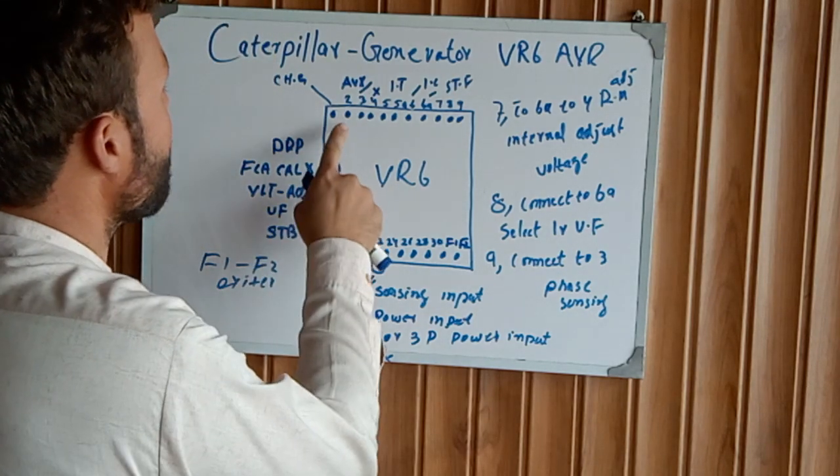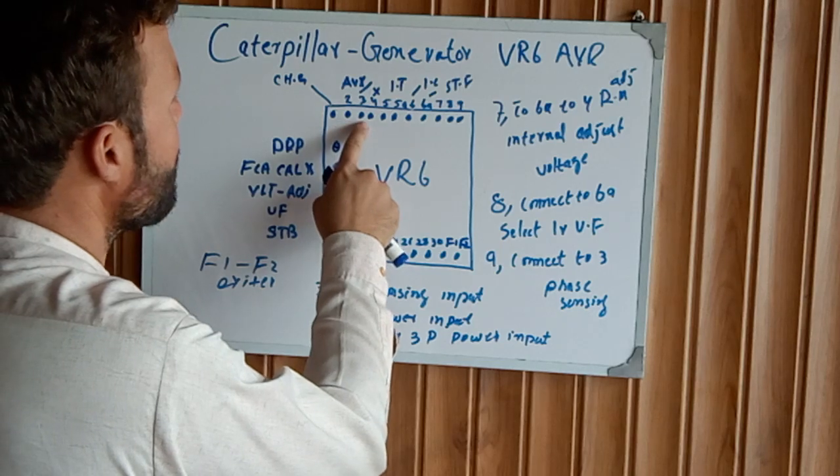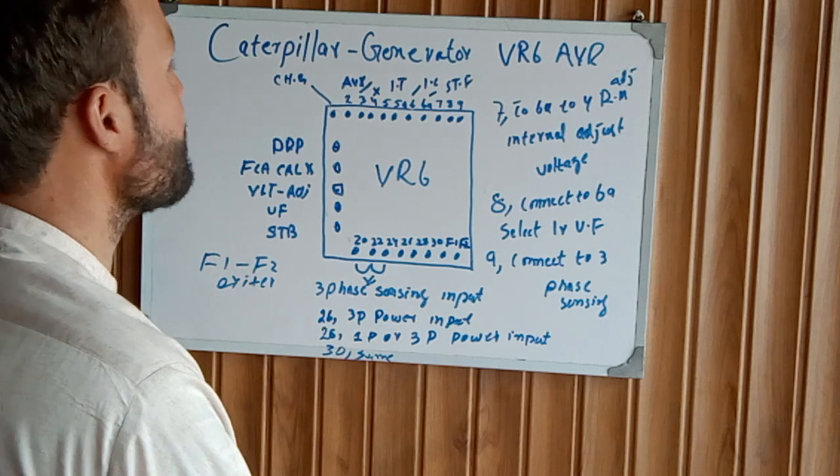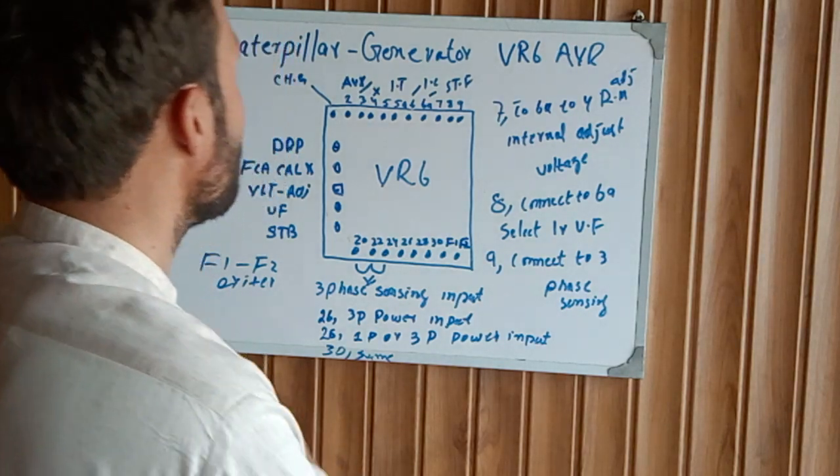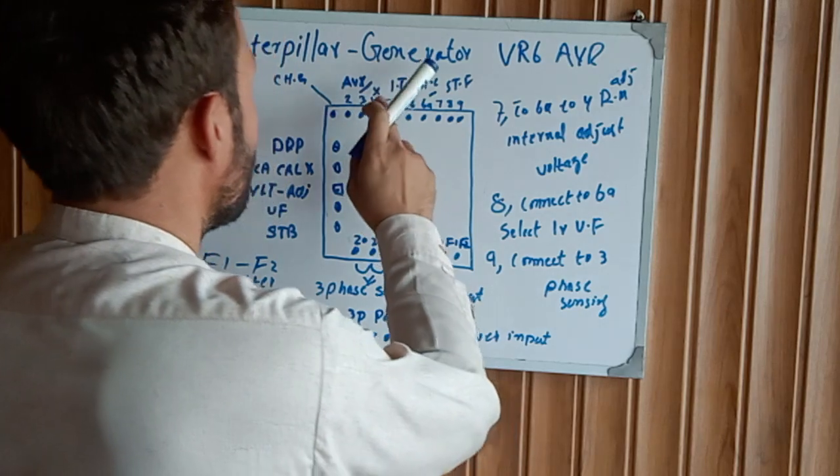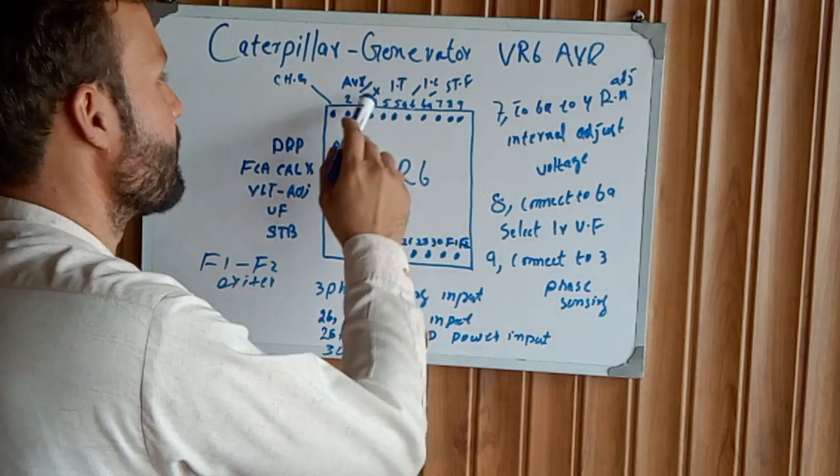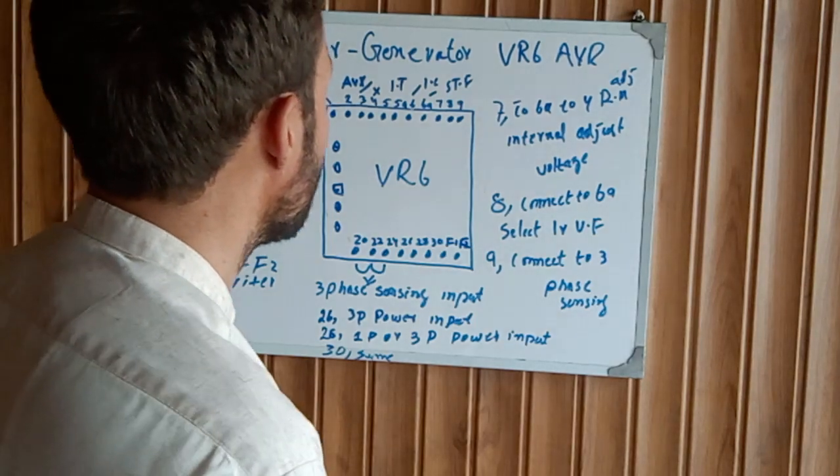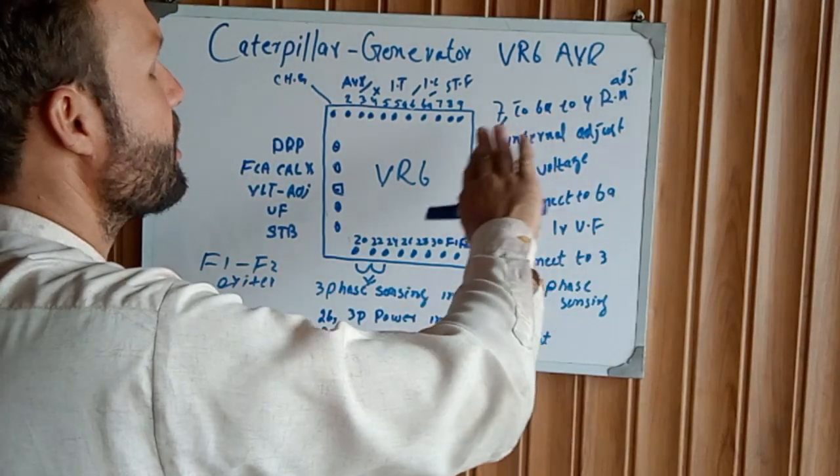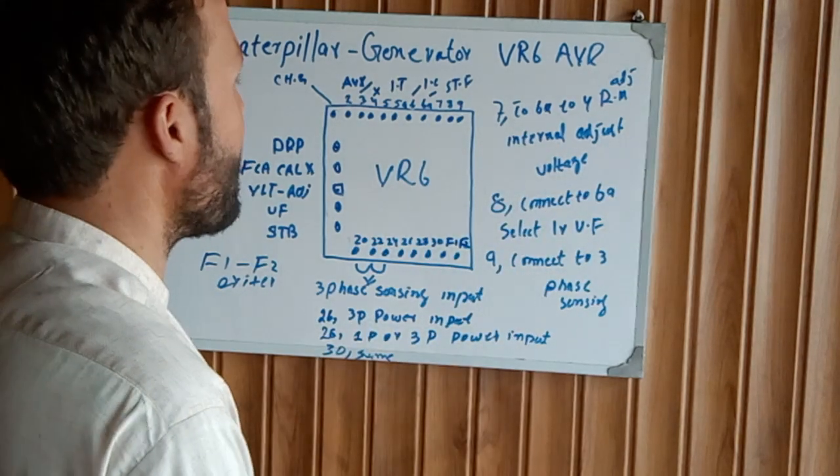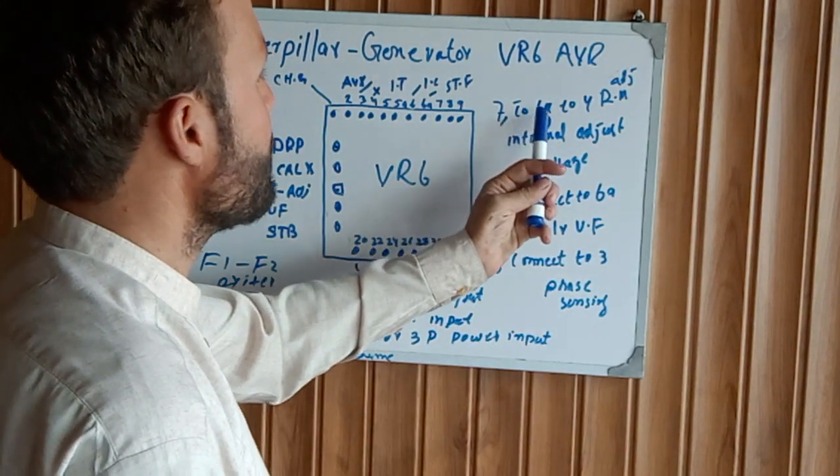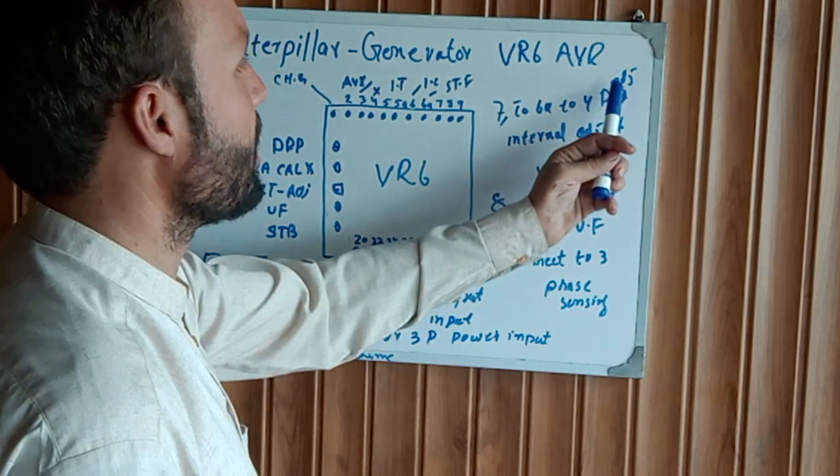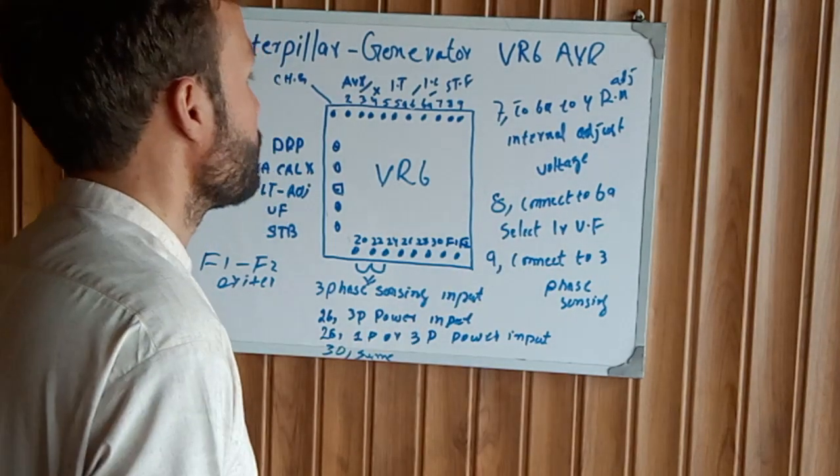After this, 2 and 3. This is all the auxiliary input for the sensing. Number 4 terminal is not in use. This terminal is used with the jumper to another terminal. Supply 7 connects to 6, 8, and 6, 2, 4 for the remote internal adjustable voltage.